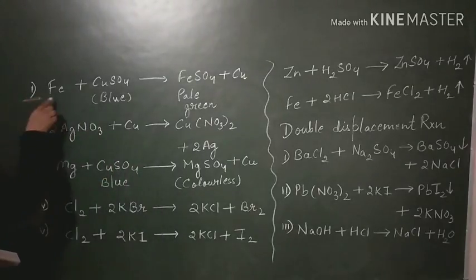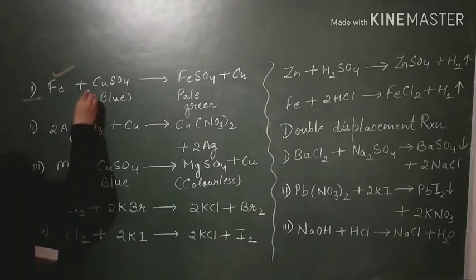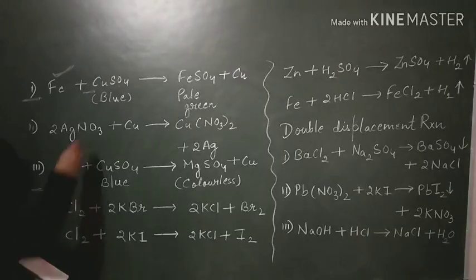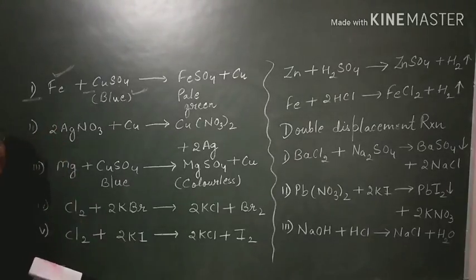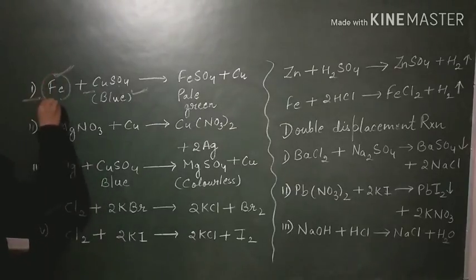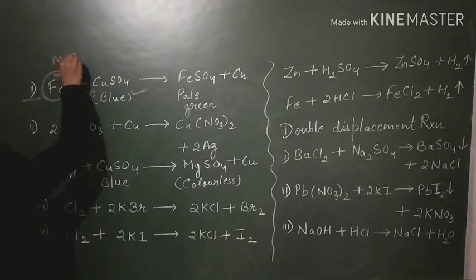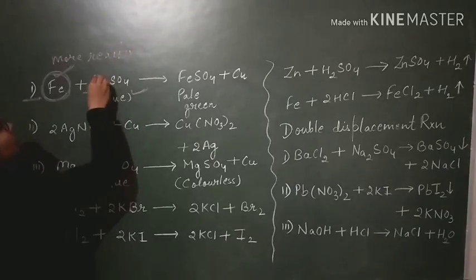Let's take an example of iron and copper sulfate — how the reaction will proceed when we add an iron nail into a solution of copper sulfate. Copper sulfate solution is normally blue in color. When the iron nail is dipped inside, the reaction happens because iron comes first in the activity series and is a more reactive metal than copper.